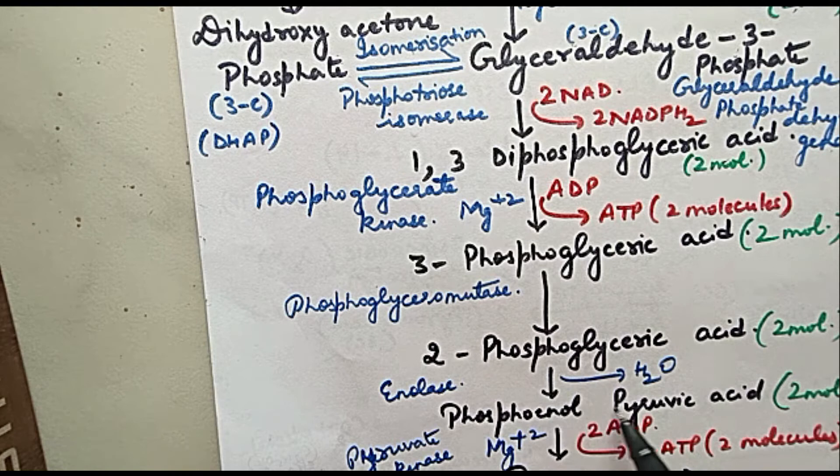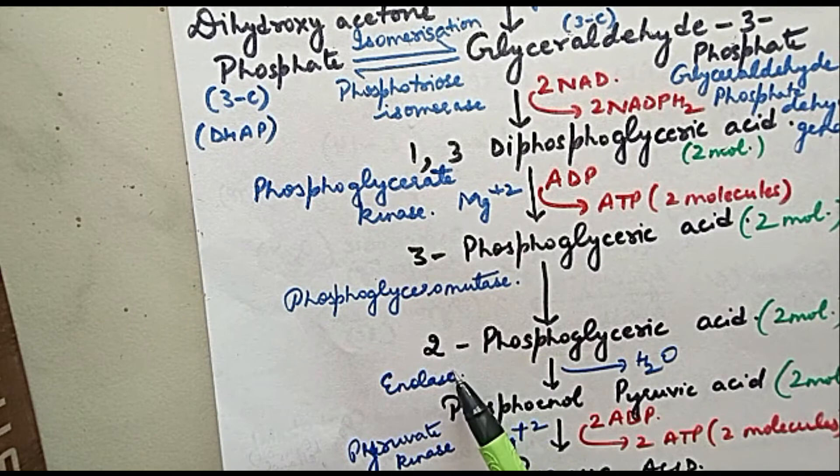2-phosphoglyceric acid undergoes dehydration - water goes away. It will get converted into phosphoenol pyruvic acid, 2 molecules. Enzyme involved is enolase.